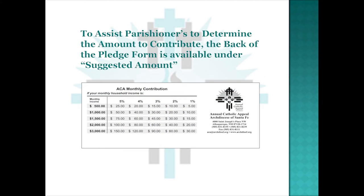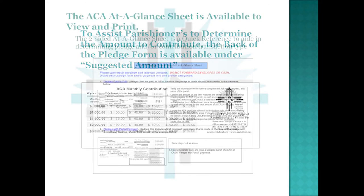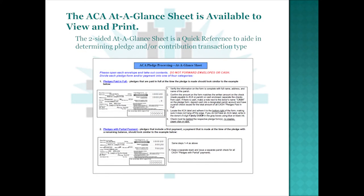To assist parishioners in determining the amount to contribute, the back of the pledge form is available under Suggested Amount. The Annual Catholic Appeal At-a-Glance Sheet is also available to view and print. This two-sided sheet is a quick reference to aid in determining pledge and or contribution transaction type.